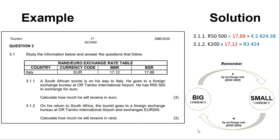This question is worth three marks. You get one mark for using the correct operation — knowing whether to divide or multiply. You get one mark for using the correct rate — whether BBR or BSR. And you get one mark for the correct answer. That makes a total of three marks.